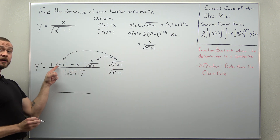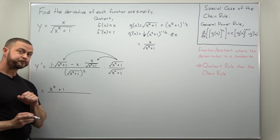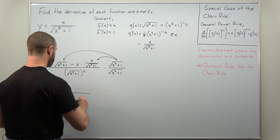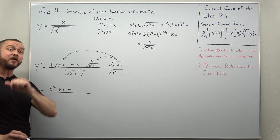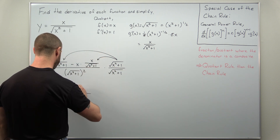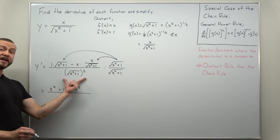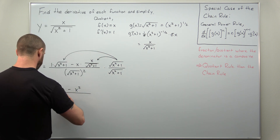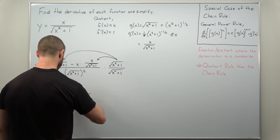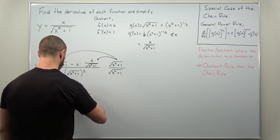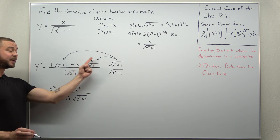Distributing: the square root times itself cancels, leaving x squared plus one. For the next term, the square root multiplies in and cancels, leaving just a factor of x, so we're left with minus x squared. The denominator is x squared plus one — from squaring the square root — and that now multiplies the remaining square root of x squared plus one.